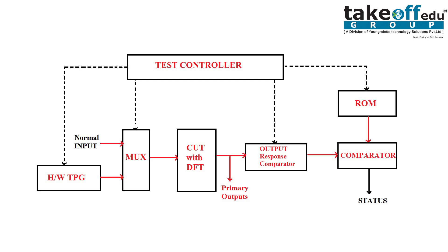Now we'll have a short brief on each block — descriptions of all the blocks. First, the Hardware Test Pattern Generator. This block uses an LFSR — Linear Feedback Shift Register — which generates test patterns automatically. You initialize one input first, and based on that input and the XOR network in the LFSR, the test patterns are generated automatically. Those test patterns are given to the CUT through an input mux.